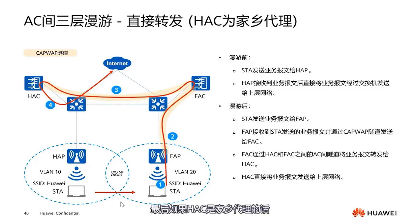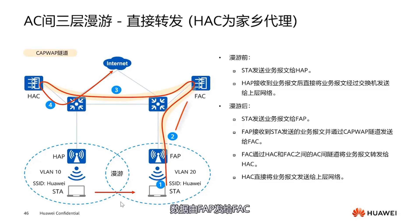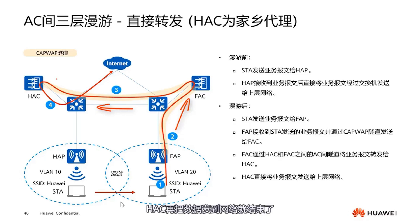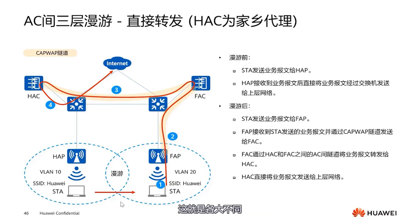If HAC is the home agent, it's simpler: data from FAP goes to FAC, FAC then sends to HAC, and HAC sends the data to the network. These are the different types of roaming — everyone should review them to understand how data forwarding works.